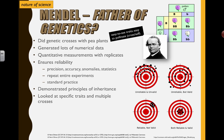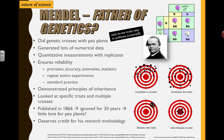He looked at specific traits in these pea plants like their height, their color, their smoothness or wrinkledness, and was able to do all these crosses and generate tons of data. If you get a chance you should try to solve a problem using some of his original data and see if you can make the predictions that he found as well. Published in 1866, ignored for 30 years — not a lot of love for pea plants at that time, but now this dude gets the respect that he deserves. He really deserves credit for his research methodology.